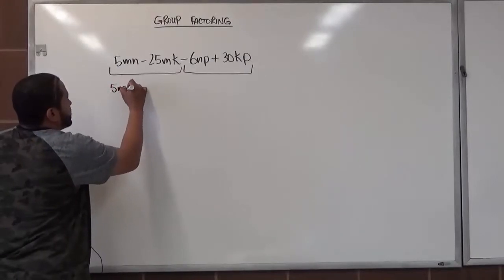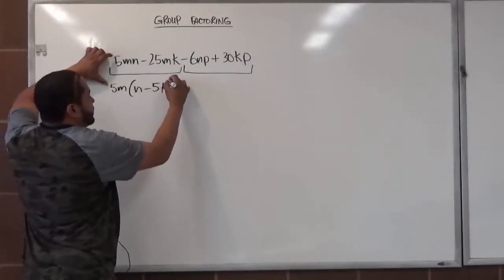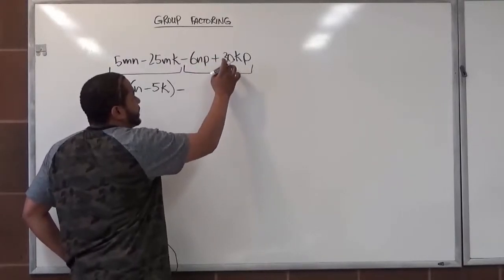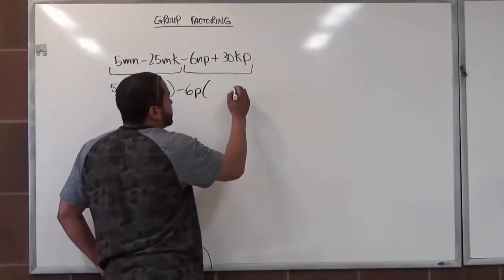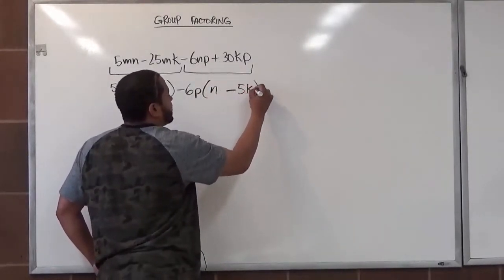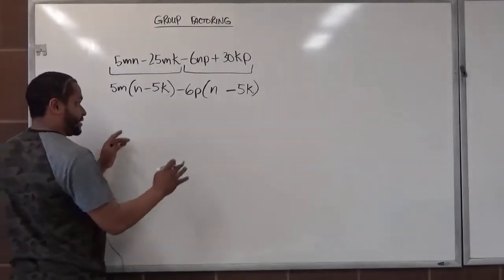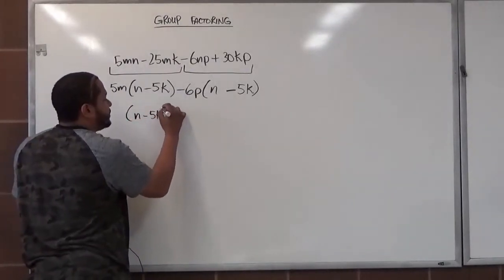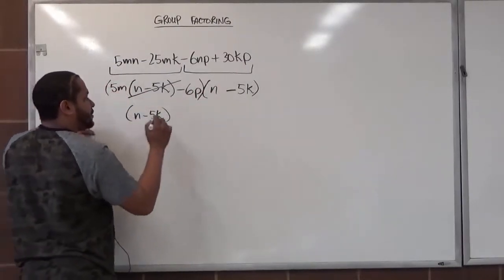So for the first set we factor out 5M, leaving N minus 5K. For the second set, since the third term is negative, we factor out negative 6P. Since the third term is negative, the fourth term also becomes negative to produce a positive, leaving N minus 5K. This time, to show order doesn't matter, we put the common factor N minus 5K in the front, and whatever's left over from eliminating the first set — simply parenthesizing what remains — gives us the second set. So the answer is (N − 5K)(5M − 6P).